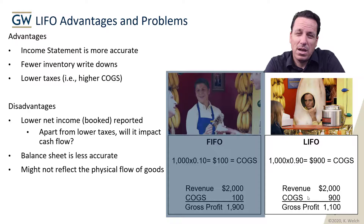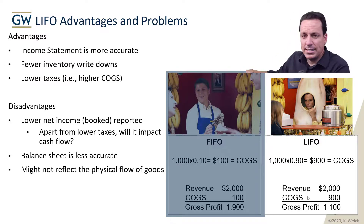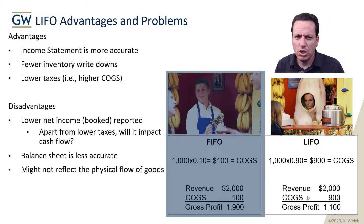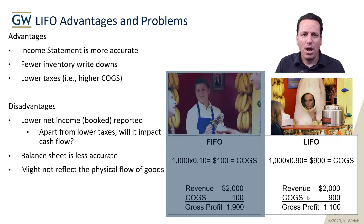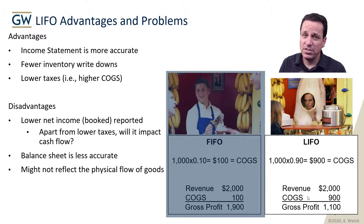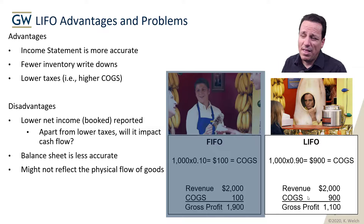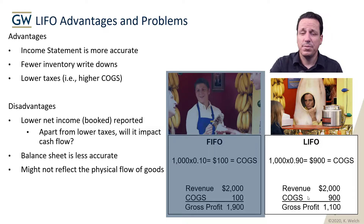Another disadvantage of LIFO is that it might not represent the physical flow of goods. Think of a pile of coal — coal doesn't go bad. You mine it, put it in a pile, add to the pile and take away from it, and coal can sit at the bottom of the pile for a very long time. That process of adding to a pile and taking some out is similar to LIFO. LIFO does represent some inventory flows, but generally most businesses try to get rid of their oldest items first. The physical flow doesn't necessarily have to match the accounting assumption — it could be completely different.